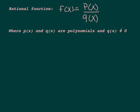We're going to start with rational functions. The definition of a rational function is some polynomial divided by some other polynomial in a ratio, and q of x, the bottom of the fraction, is not zero.